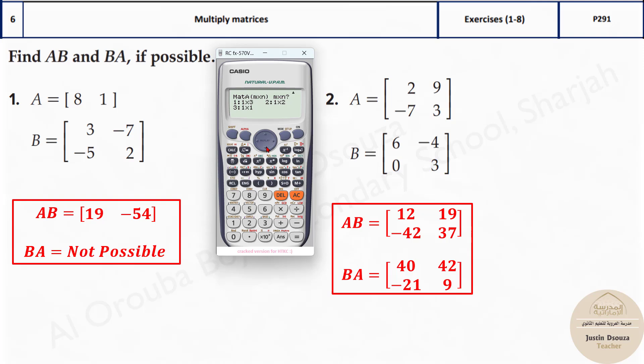There's no option over here. Let's press down. Here we get option 2, 1 by 2. Now type in the values 8 and 1 and then press AC.